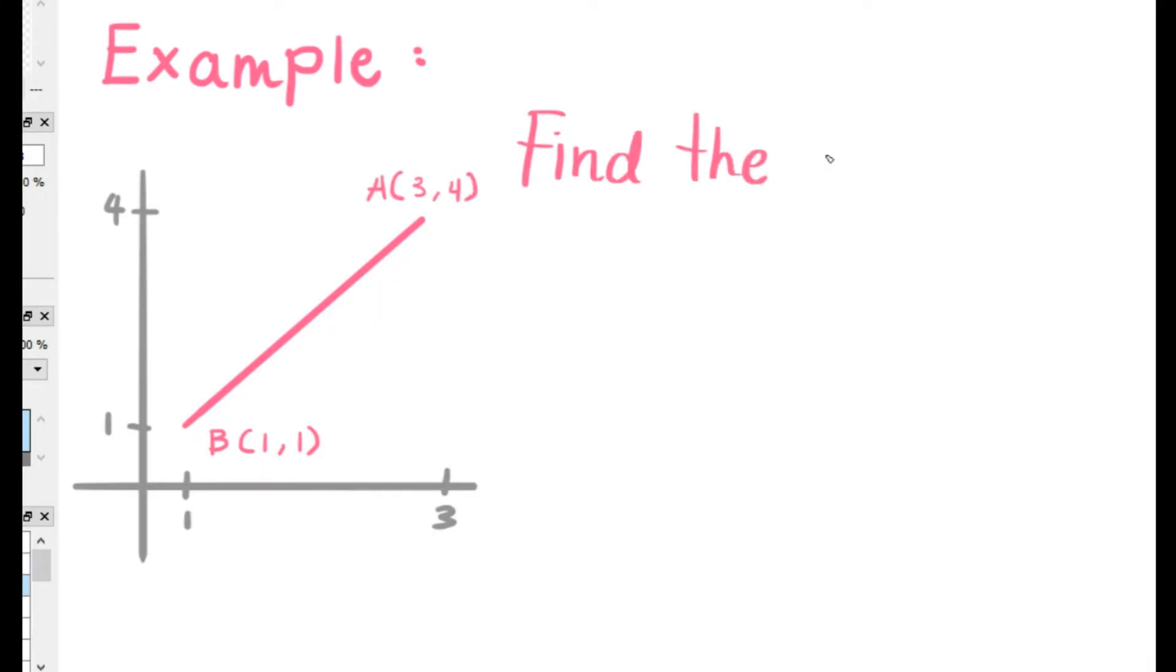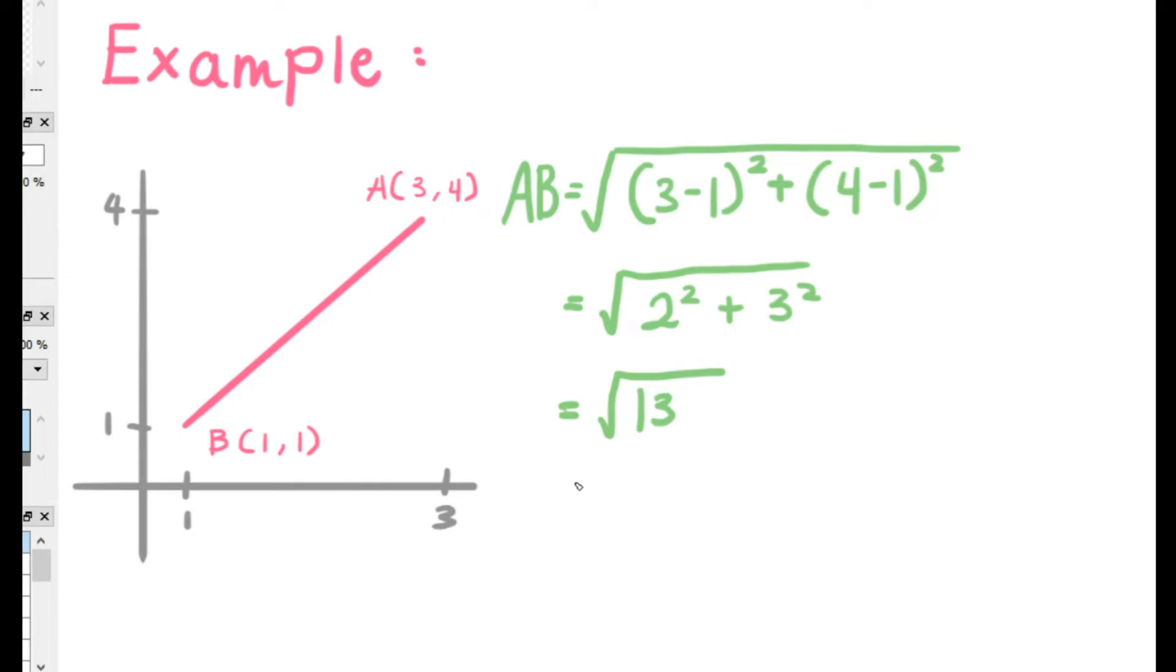So here's the example. As you see in this example, given coordinate points A(3,4) and B(1,1), it is asked to find the distance between A and B. So as shown, AB equals the square root of 3 minus 1 squared plus 4 minus 1 squared, which ends up becoming square root of 2 squared plus 3 squared, which is 4 plus 9, and it becomes the square root of 13. Once it's done square rooting, it's 3.6.